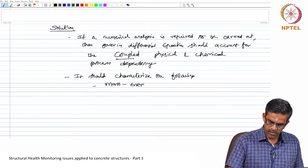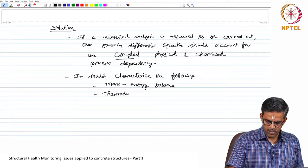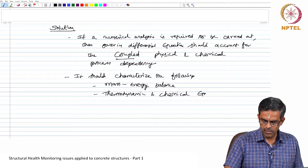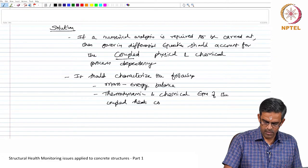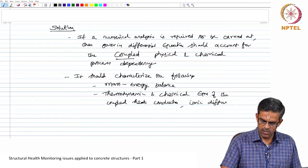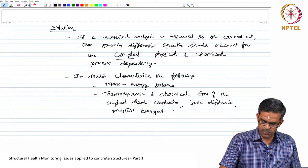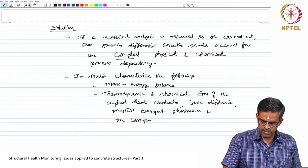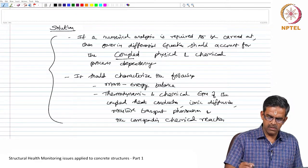Thermodynamic and chemical equilibrium. So, the equilibrium of the coupled heat conduction, ionic diffusion, moisture transport phenomena and the corresponding chemical reaction. So, it is very complex to analyze this numerically.